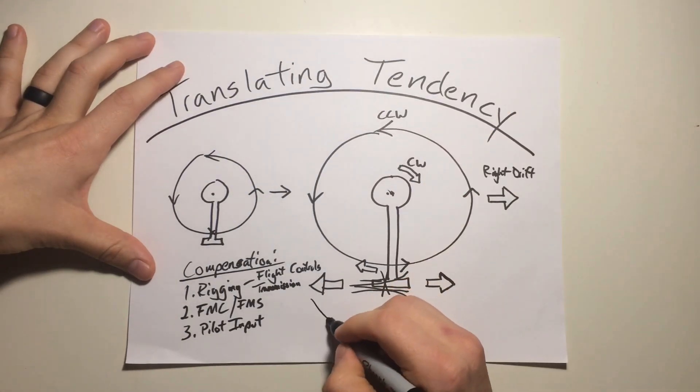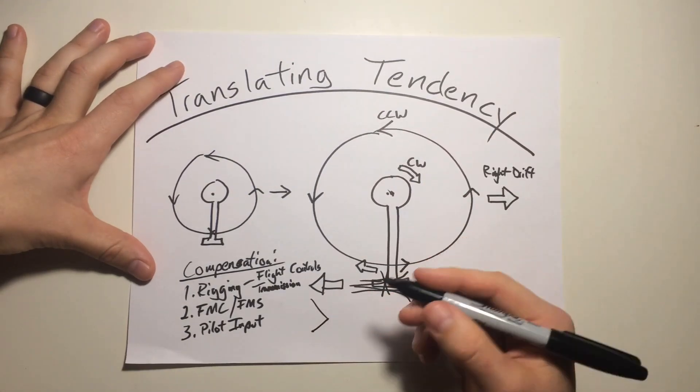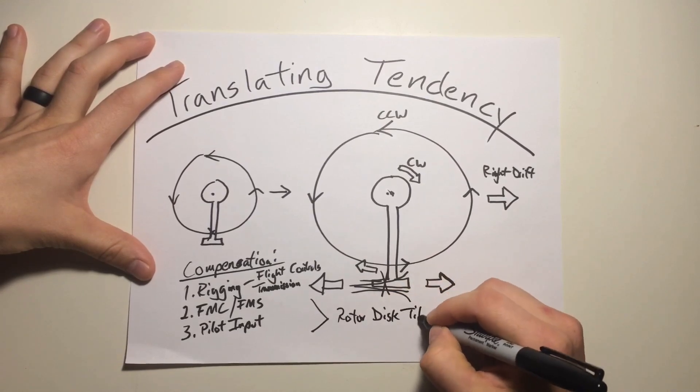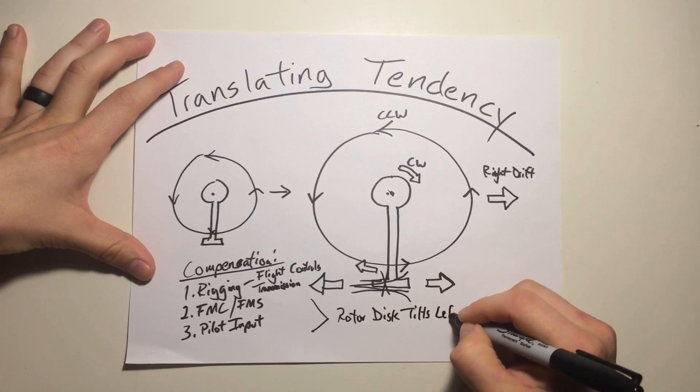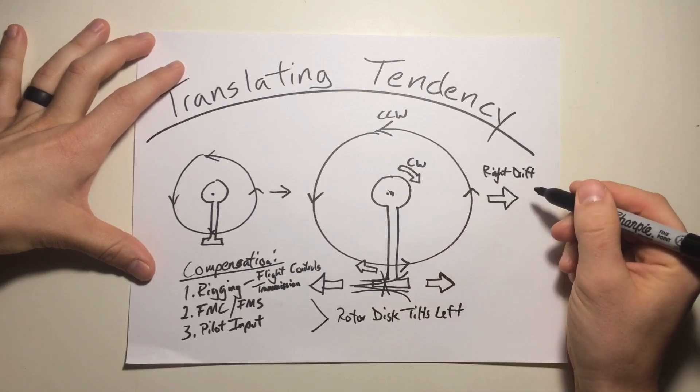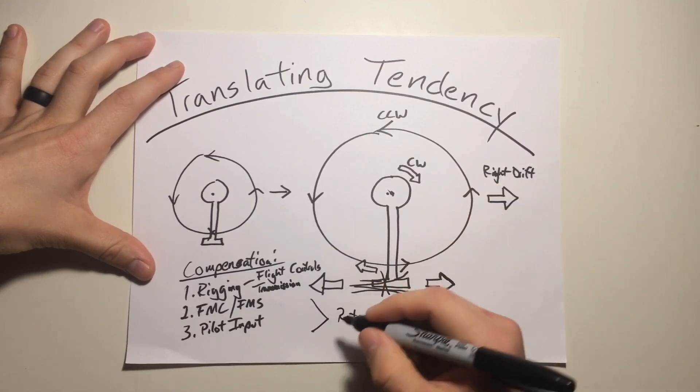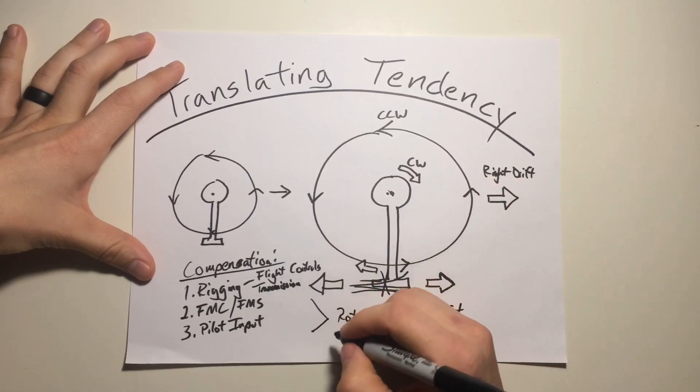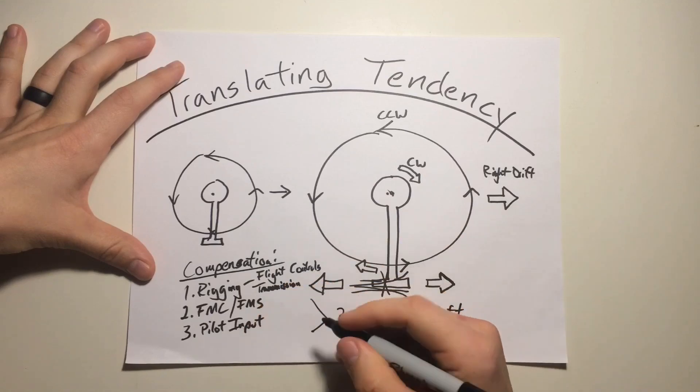But, in all three of these cases, what's going to happen? Again, the rotor disc tilts left to fight that right drift. And because of that, the fuselage always, always, always follows the rotor system, just like a pendulum hanging underneath it at all times.